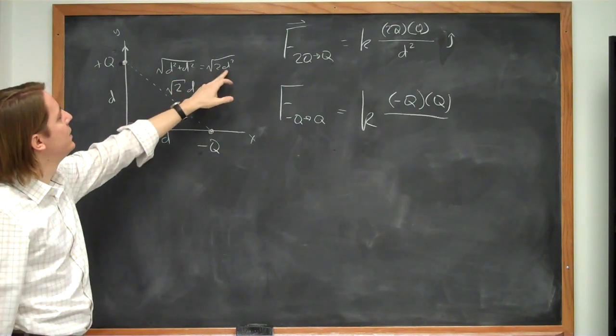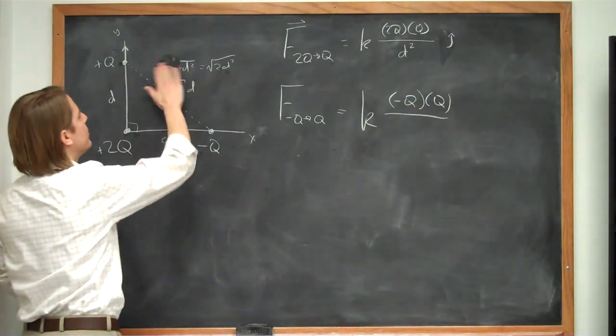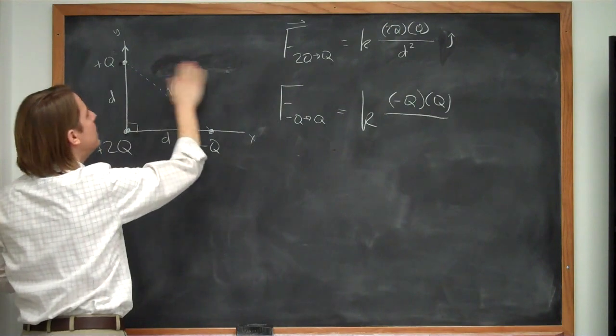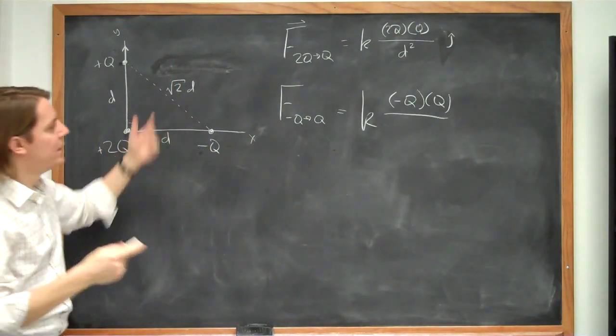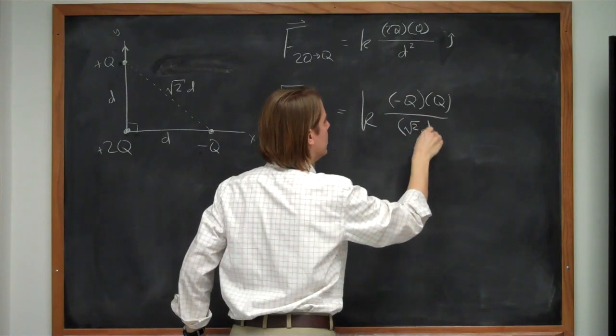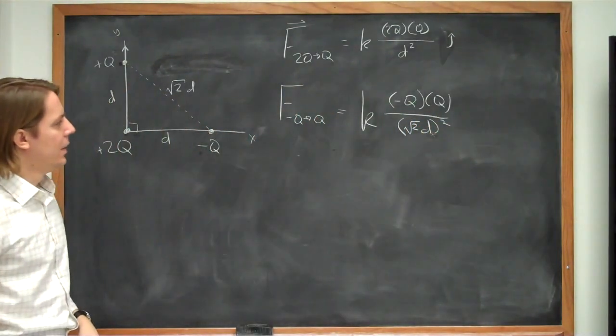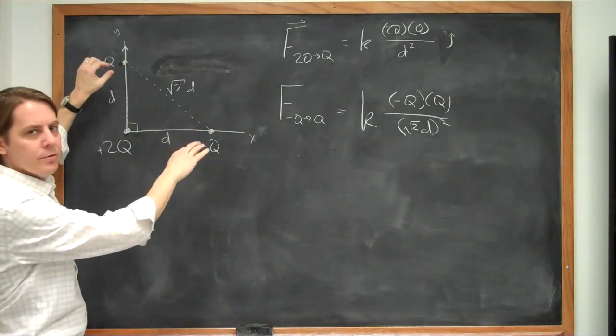So the square root of d squared turns it into a d, and the square root of 2 is just the square root of 2. So this side is equal to the square root of 2 times d. And then we take that and we go with square root. So the square root of 2 times d squared.